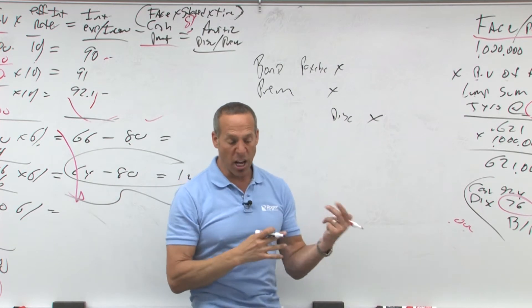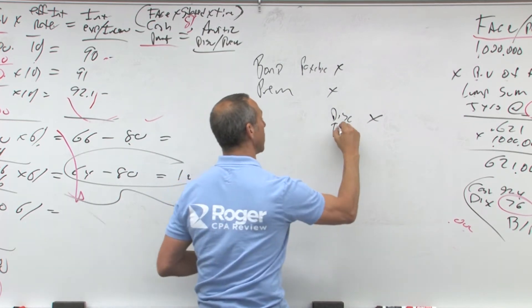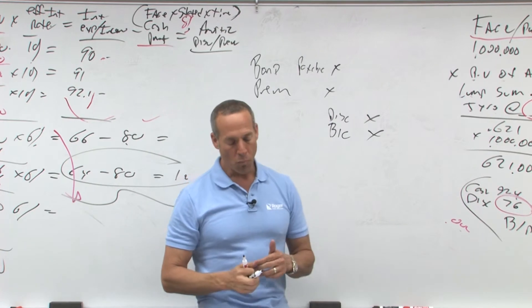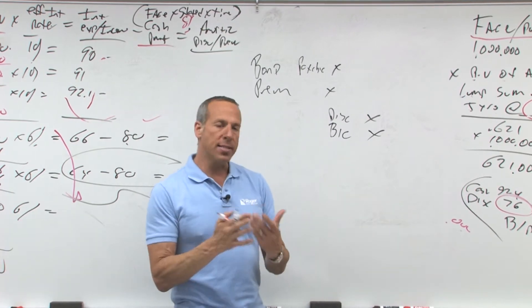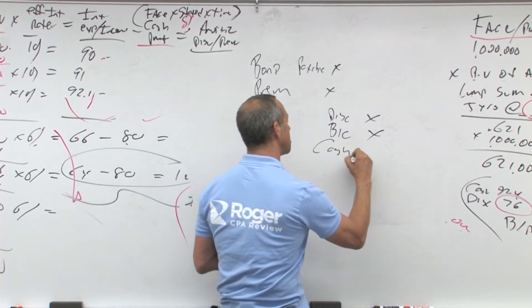If there's any unamortized bond issue costs, get rid of those. So we're going to credit out the BIC. Then we're going to pay some cash and they're going to tell us how much cash we pay.